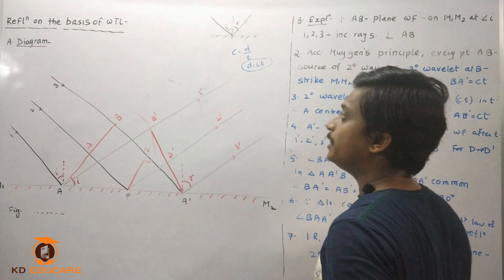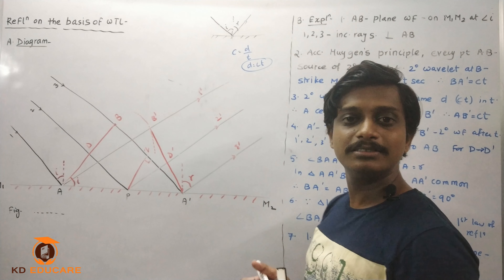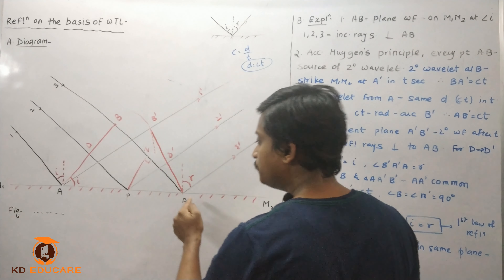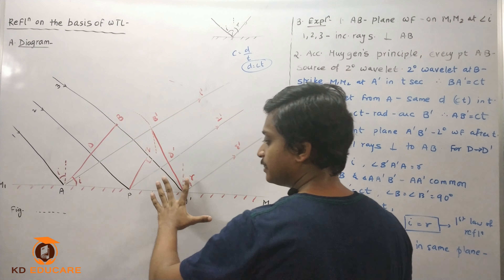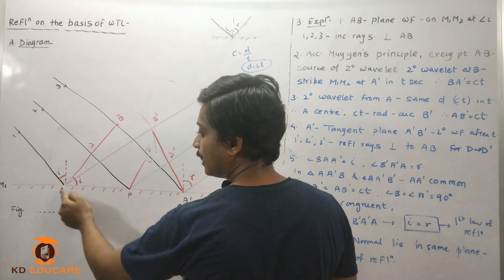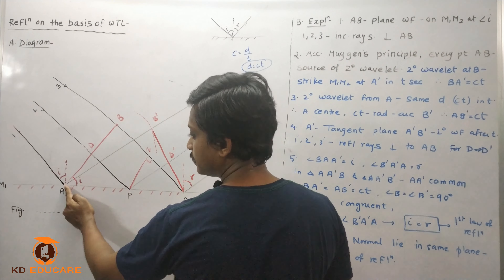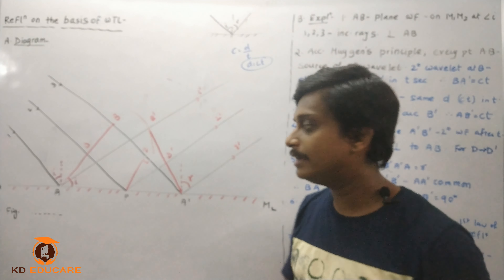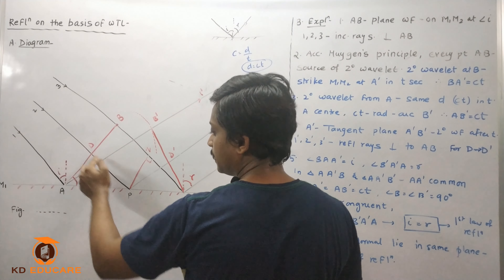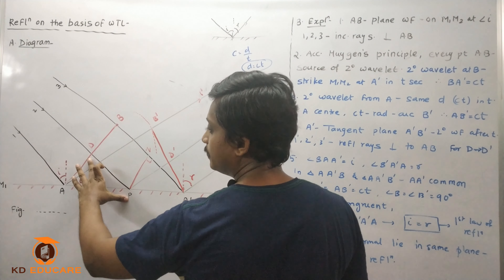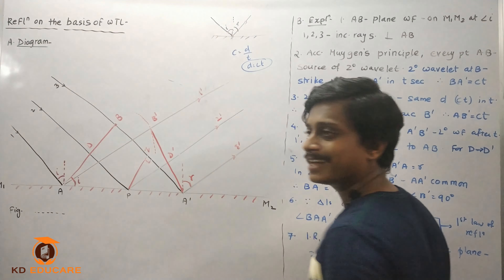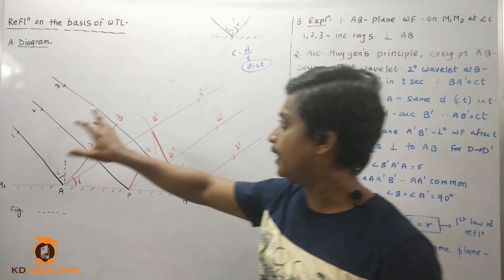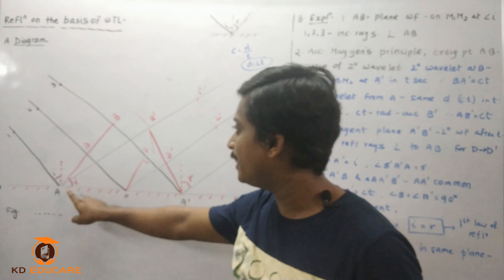The distance covered is C × T. This distance has been covered. In that time duration, the reflected ray from point A will also cover an equal distance D. The wavefront from D to P covers the same distance. So here, the incident wavefront is represented as AB.